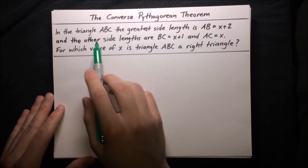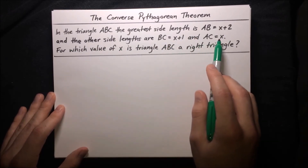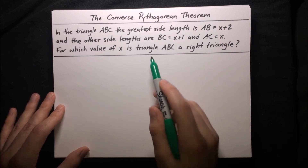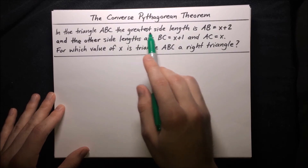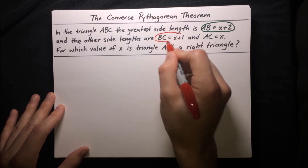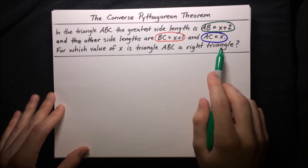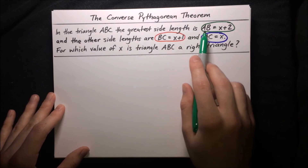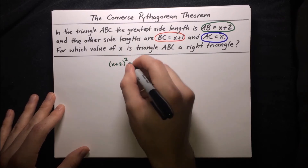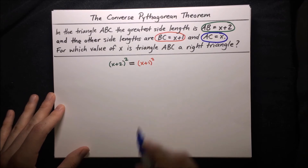Here's another problem. In triangle ABC, the greatest side length is AB, which is x plus 2, and the other side lengths are BC, which is x plus 1, and AC, which is x. For which value of x is triangle ABC a right triangle? We'll use the Converse Pythagorean Theorem. The greatest side is AB, which is x plus 2. We need the square of the longest side, x plus 2 squared, to equal the sum of squares of the other sides: x plus 1 squared plus x squared.